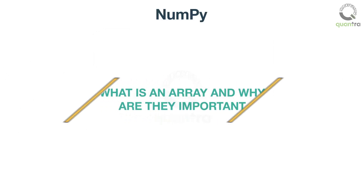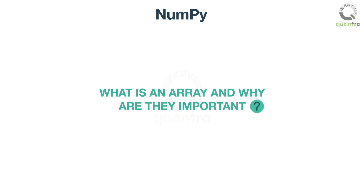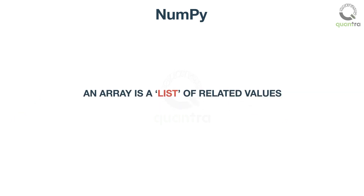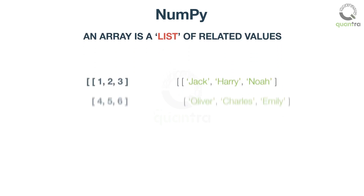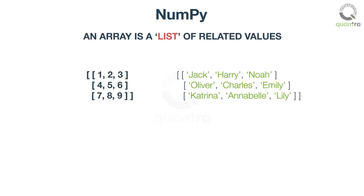So a natural question here is: what is an array, and why are they important? An array is a list of related values — that is, every value in an array is of the same data type, and is only differentiated by the position within the array.